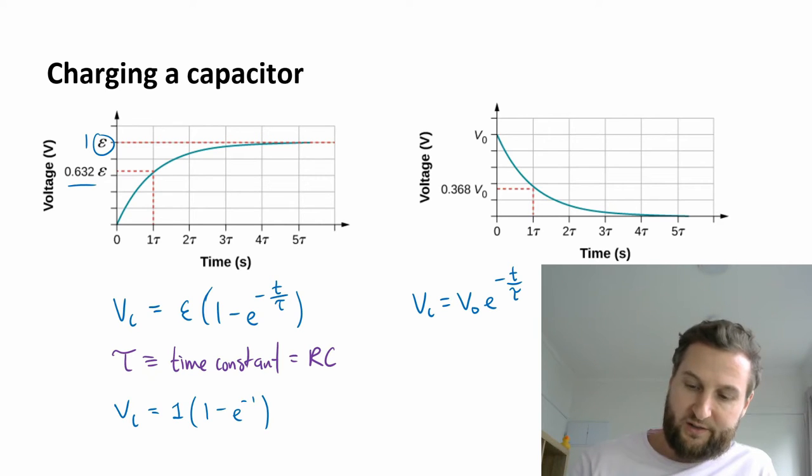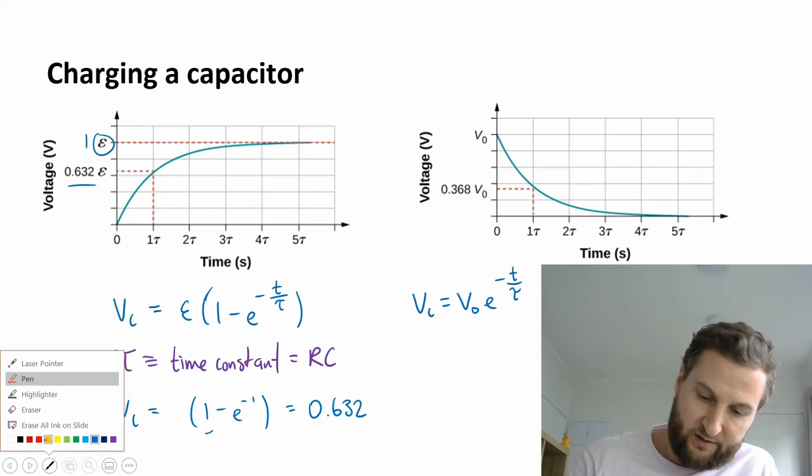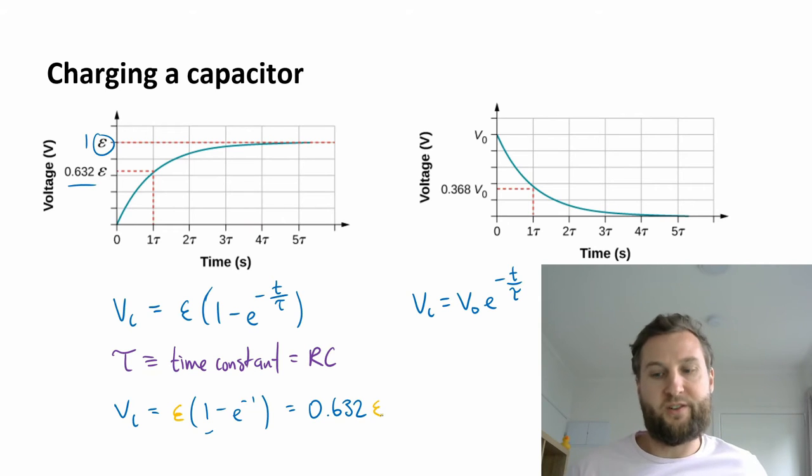And you can do this calculation. So e to the minus 1, that's just 1 over e, and this comes out to 0.632. And if I didn't have 1 in here, I could just keep that in my equation, so that would be like 0.632 of whatever that peak or that max voltage is, or 63% of the peak.